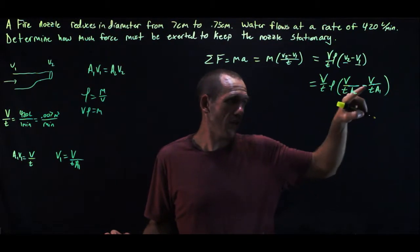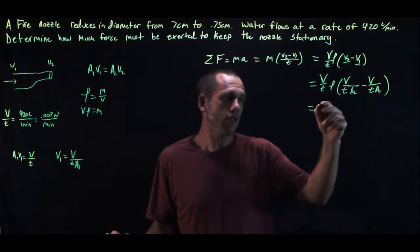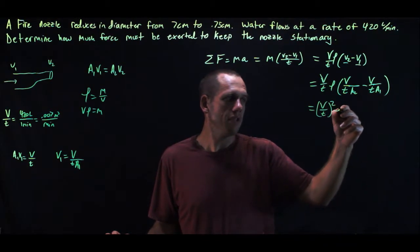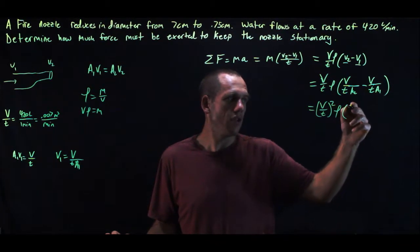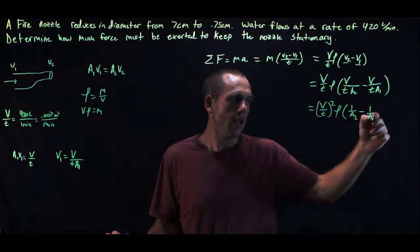Now, you see this volume divided by time is actually in both equations. So this is equal to volume divided by time squared times the density times 1 over A2 minus 1 over A1.